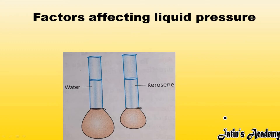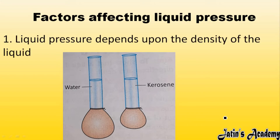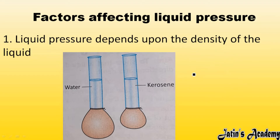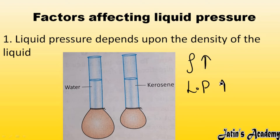Now we are looking at factors affecting liquid pressure — on which factors liquid pressure is going to depend. The first factor is density of the liquid. Density is mass per unit volume, meaning how much matter is contained in a given volume. If the density of any liquid is more, then the liquid will also exert more pressure on that material.